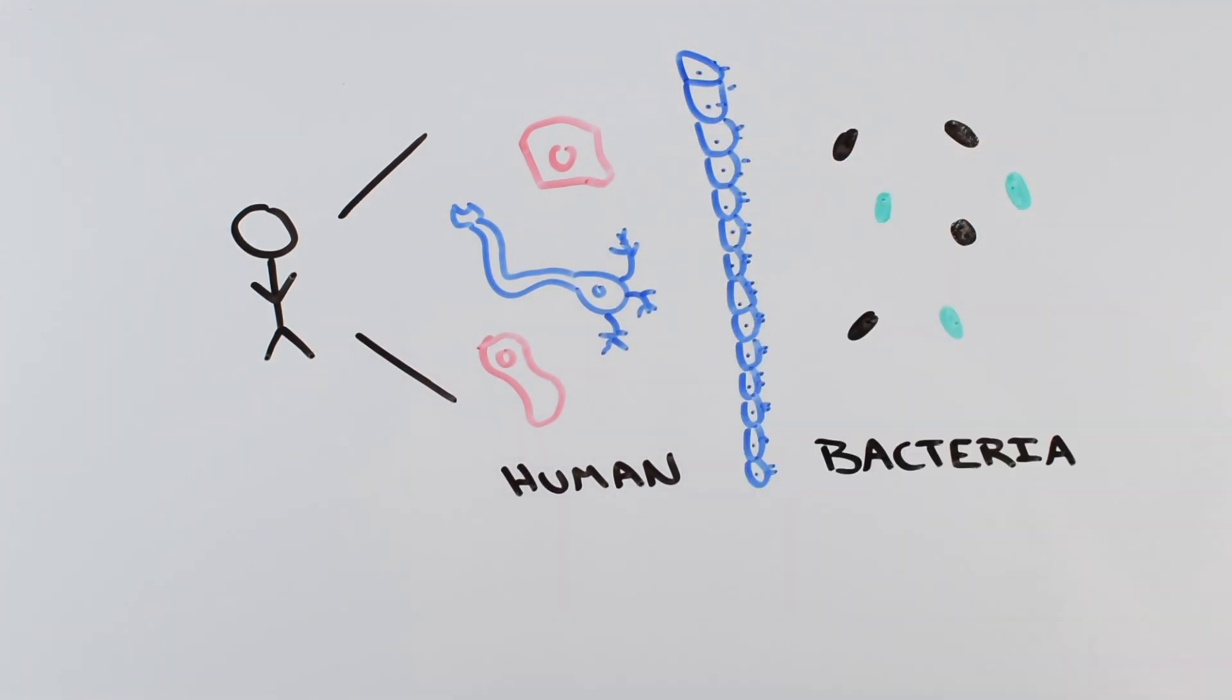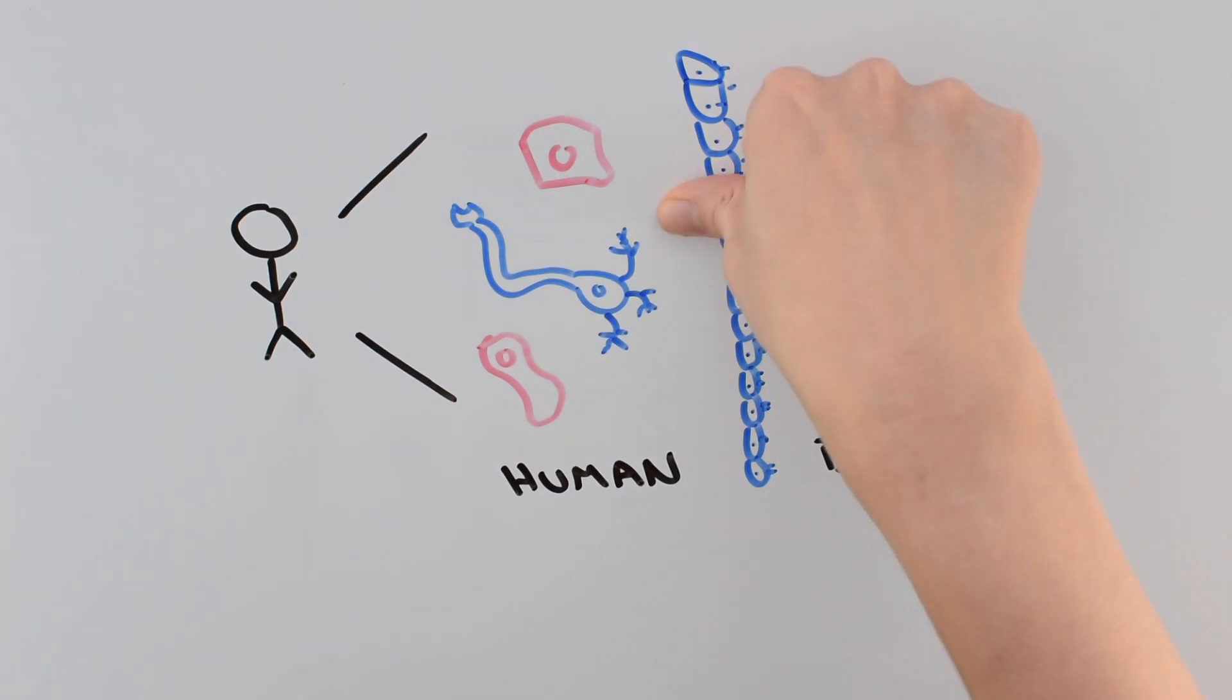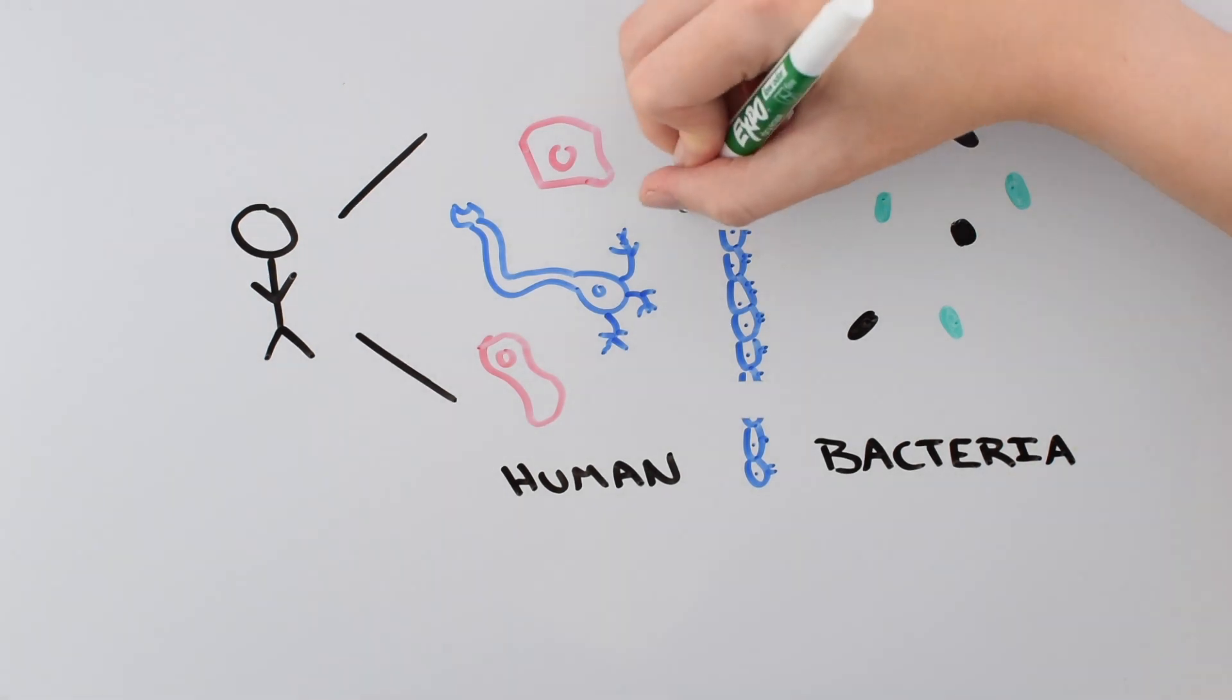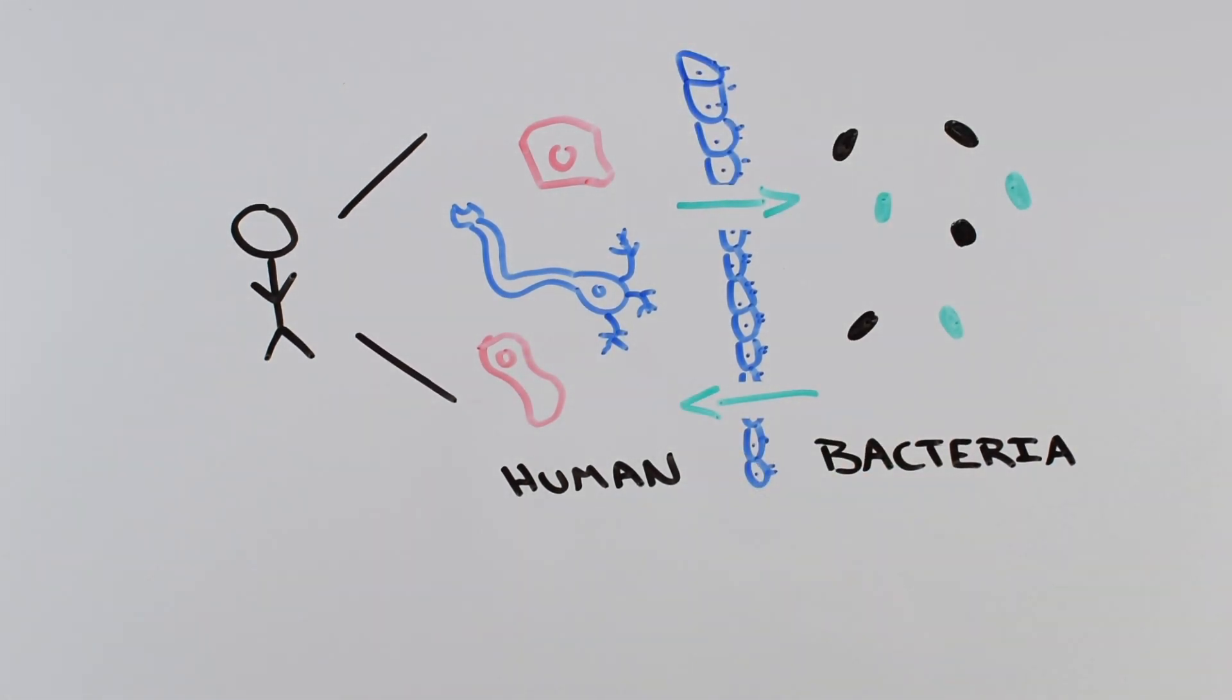While it may look as if this single cell layer functions as a wall to keep bacteria out, in reality there's a lot of exchange and cooperation between the microbiome and the human cells. Your microbiome is a part of you, and together you get nutrients and prevent infection.